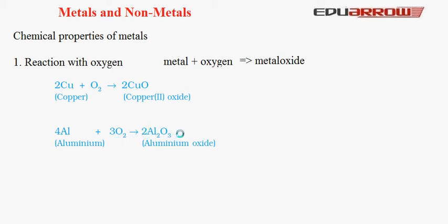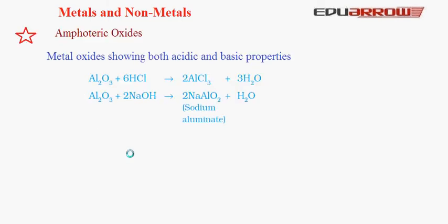Now let us discuss what are amphoteric oxides. Some metal oxides show both acid and basic properties; these metal oxides are known as amphoteric oxides. For example, Al₂O₃ reacts with acid (HCl) to give AlCl₃ (aluminium chloride) and water. Al₂O₃ also reacts with base (NaOH) to give NaAlO₂ (sodium aluminate) and water. When reacting with acid it behaves as a base, and when reacting with base it behaves as an acid — both being neutralization reactions.